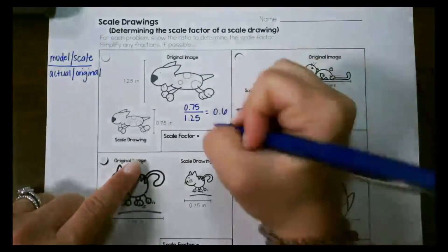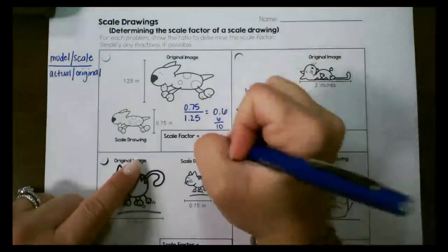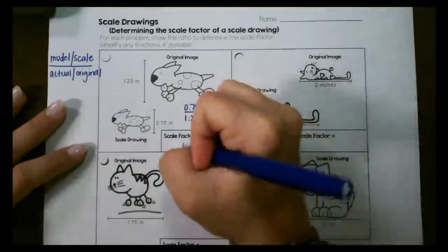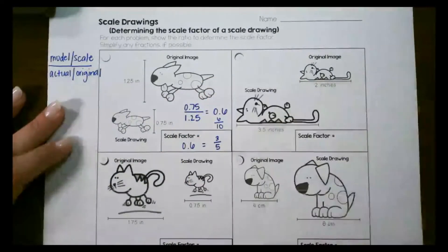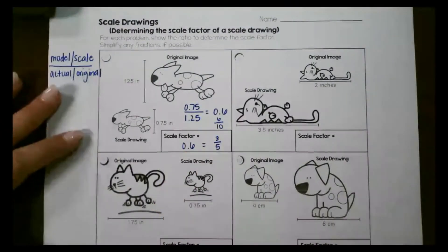When I divide it I get 0.6 which is also 6 tenths and that would simplify to 3 fifths. So depending on whether they want it as a decimal or a fraction or a ratio that's how we could set that up.